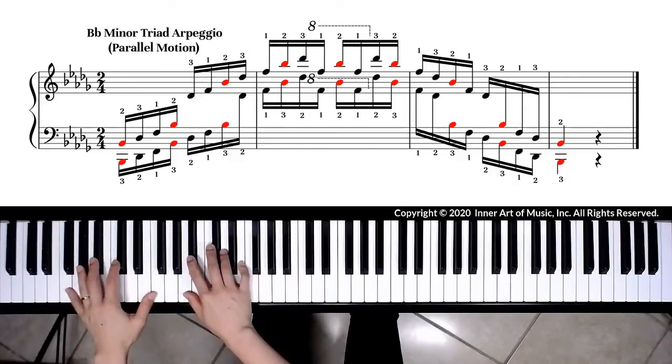Another hint in the fingerings for Bb minor triad arpeggio: we use both hands' thumbs to play the note F.